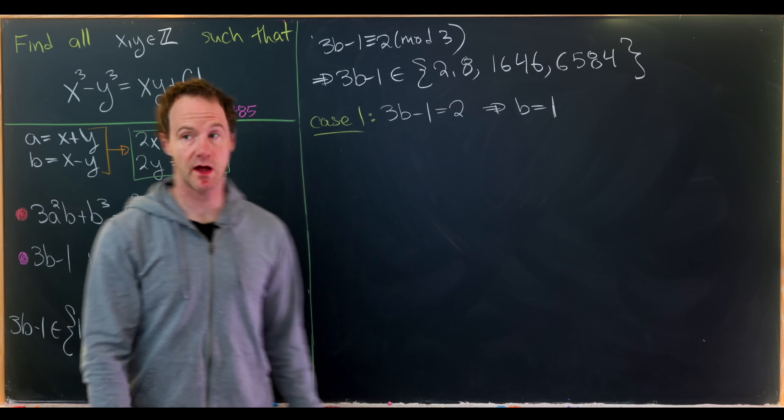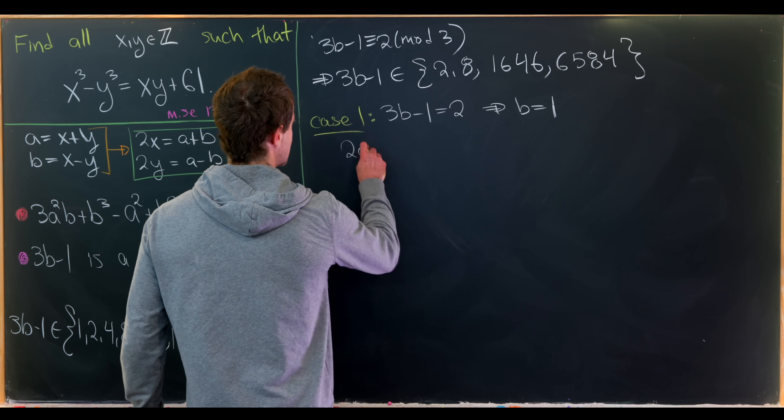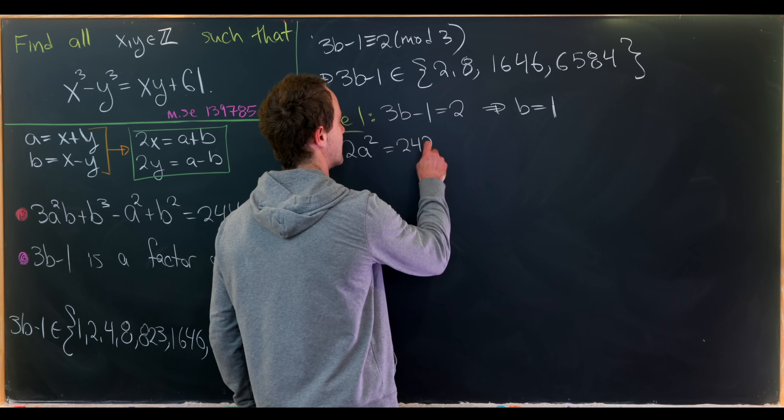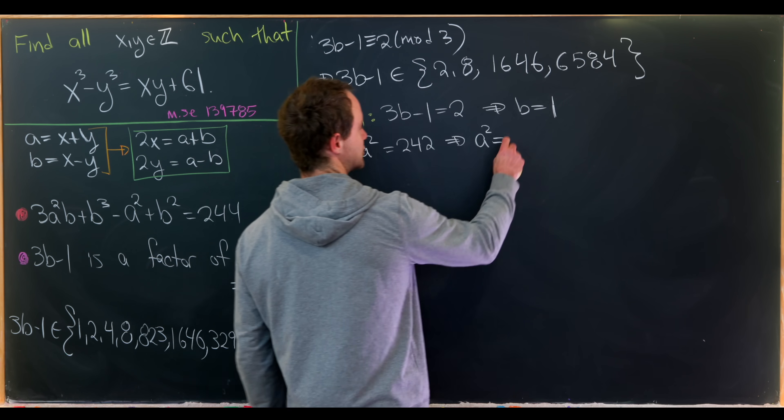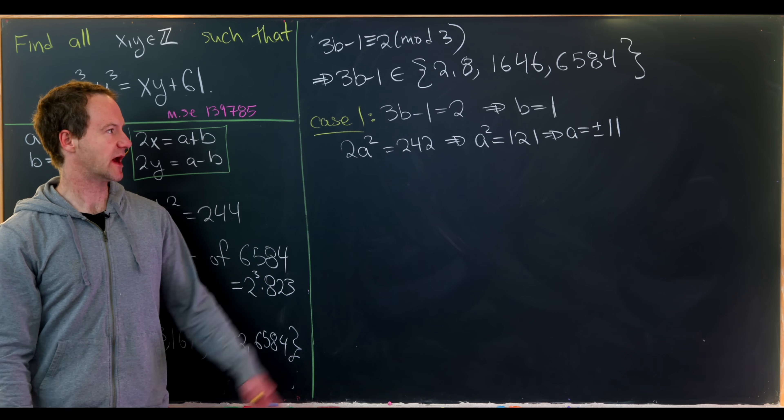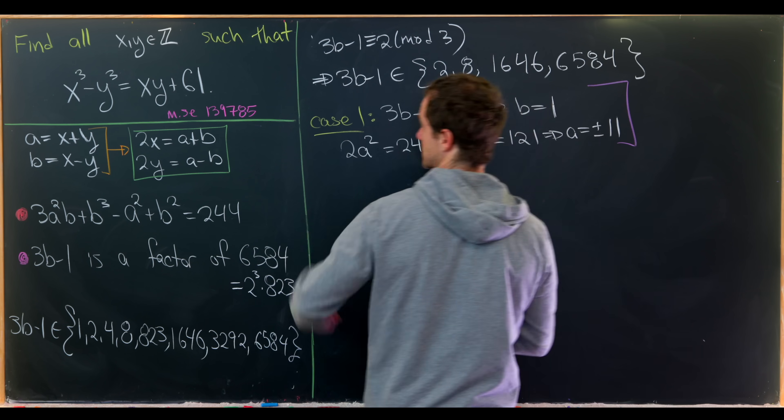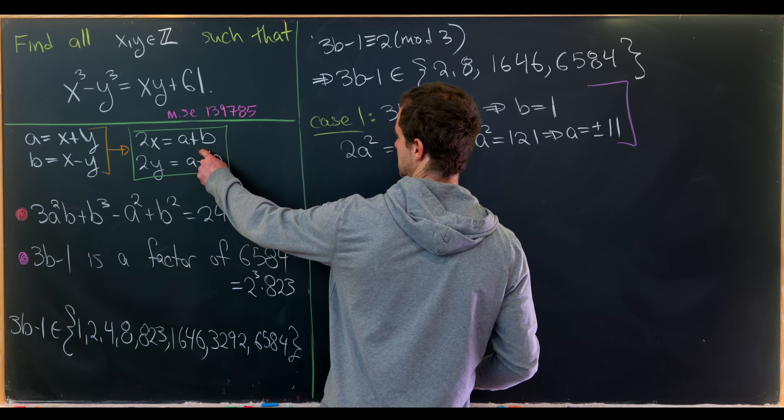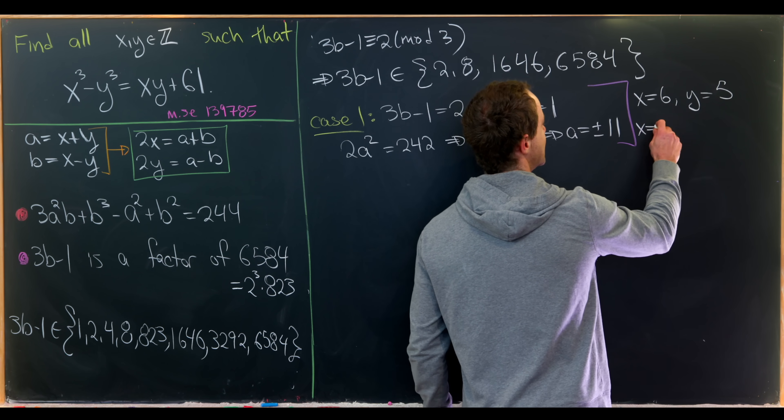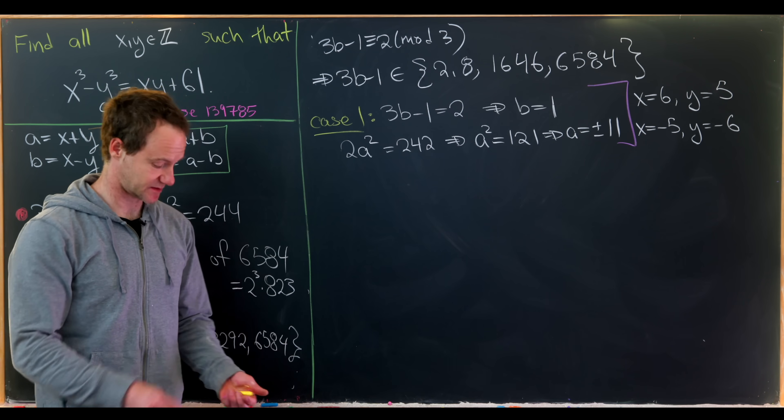If b equals 1 is plugged into this equation we get a nice simplification. We have 3a squared minus a squared, so that is 2a squared. And then we have a 1 and a 1 which we can move over to give us 242. That's the same thing as saying a squared equals 121, which is the same thing as saying a is plus or minus 11. But if b is 1 and a is plus or minus 11 we can find our original values of x and y. What we'll get is x equals 6 and y equals 5 is one of our solutions, and x equals negative 5 and y equals negative 6 is another solution.